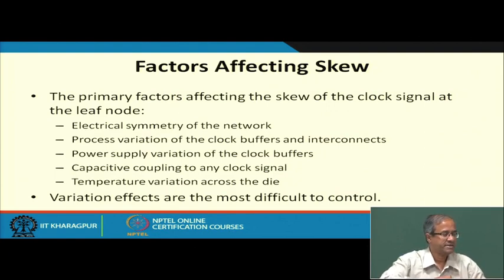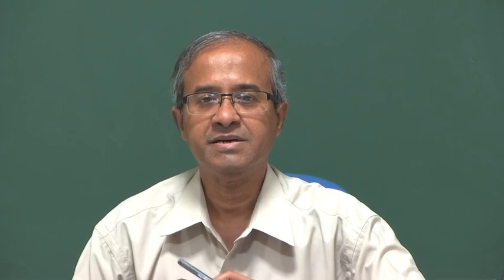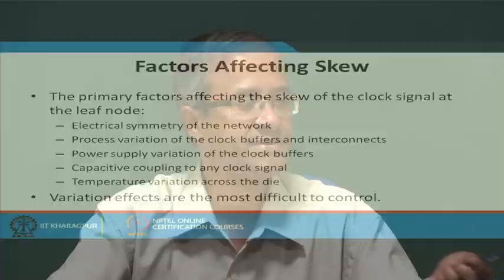The first factor that affects the skew is the electrical symmetry of the network. Electrical symmetry means that when I am generating the clock from somewhere and distributing it to several leaf or terminal points, each path will have resistive, capacitive, and inductive effects. If you lay out these wires such that the delay on each is approximately equal to the extent possible, then you can achieve some kind of symmetry — that is electrical symmetry of the network.